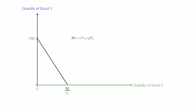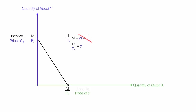If the consumer consumes no X, I use zero for X. So income equals Y times the price of Y. Solving for Y by multiplying both sides by 1 over price of Y gives Y equals income divided by the price of Y. So the y-intercept is income divided by the price of Y, and the x-intercept is income divided by the price of X.